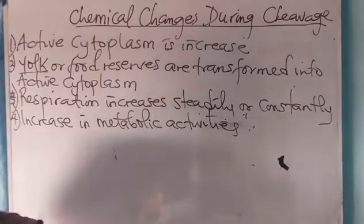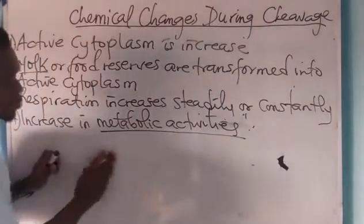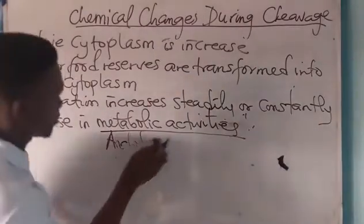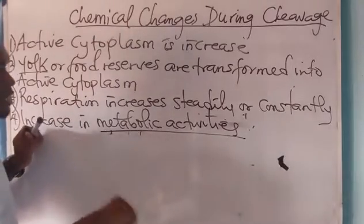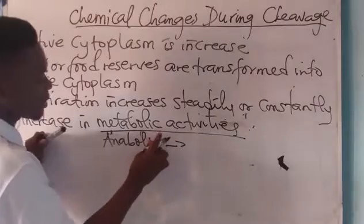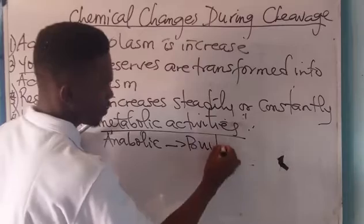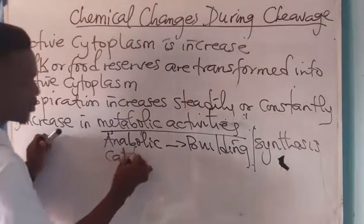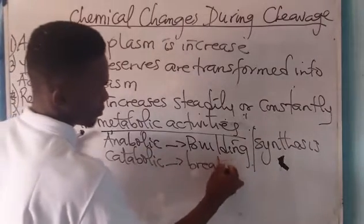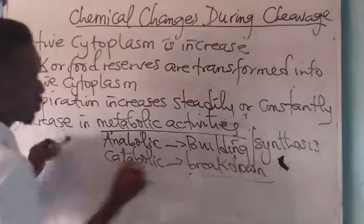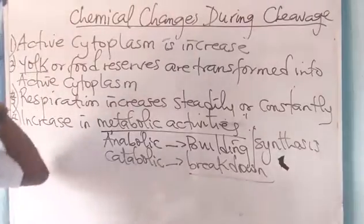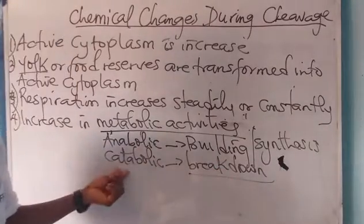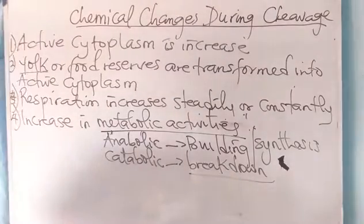This increase in metabolic activities could be anabolic — that is, a building-up or synthesizing activity — or it could be catabolic, that is, a breaking-down or splitting activity. So all of these processes occur in the cell. Take note of that — it is very important.